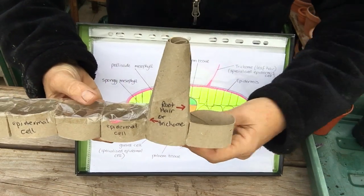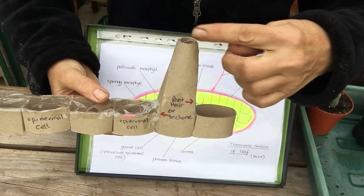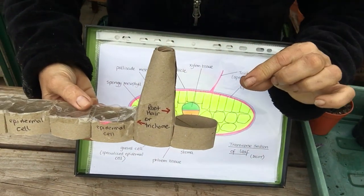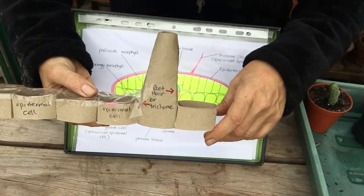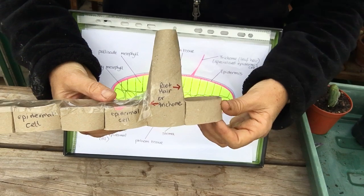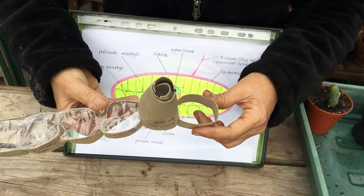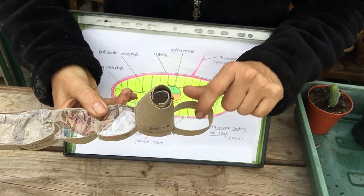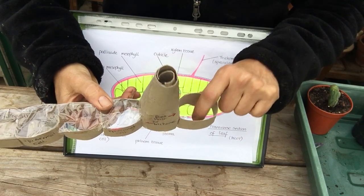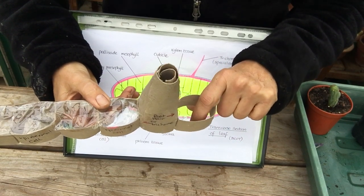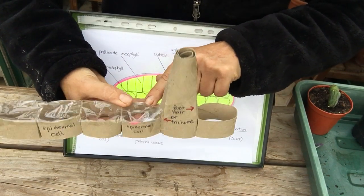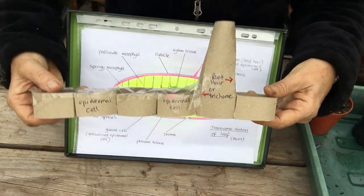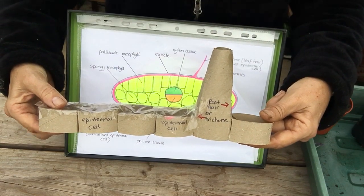However, if it's in the root, this trichome is now called a root hair. It's the very fine root hair which absorbs water and provides a large surface area. And obviously in the root there is no cuticle on the epidermis, otherwise it would not be able to absorb water as the cuticle is water repellent. So that's one representation of the epidermis.